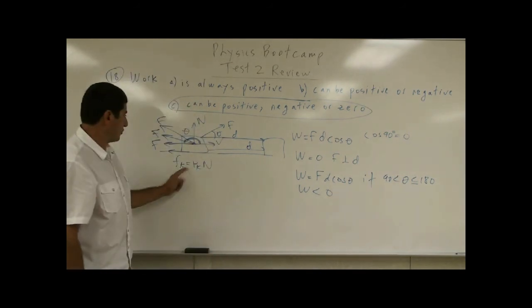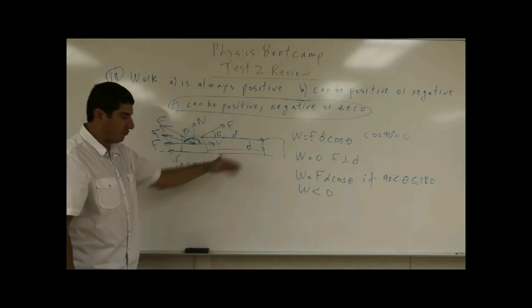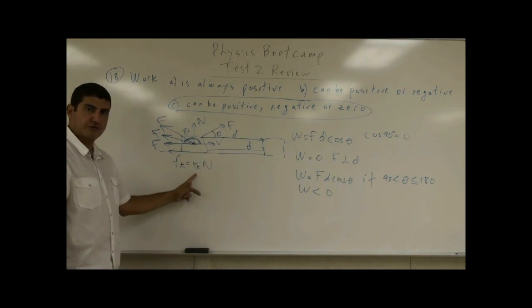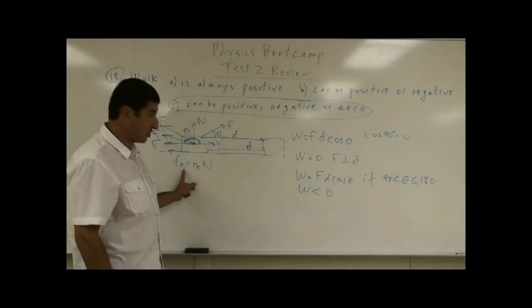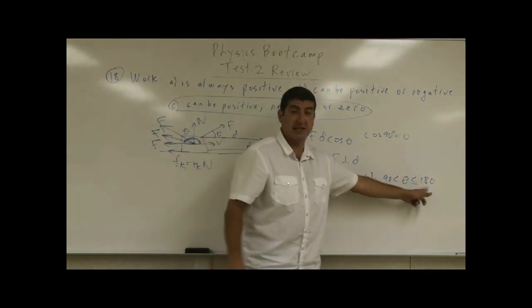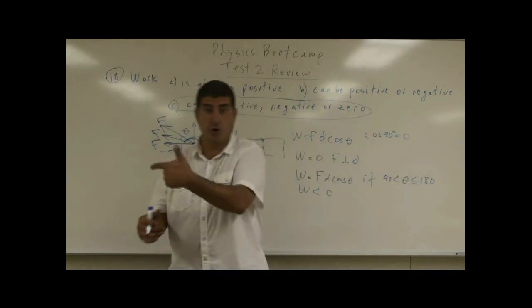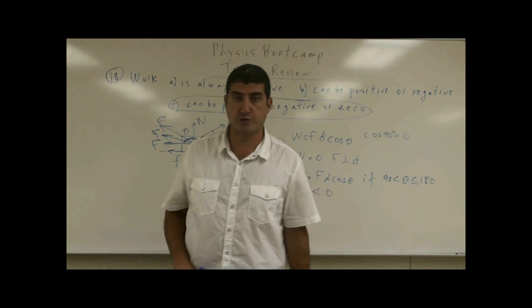So the friction force is always opposed to the direction of motion. It's equal to the coefficient of kinetic friction times the normal force and therefore the work done by friction is equal to negative. And the angle of the friction is going to be actually 180. It's going to be exactly opposed to the direction of the motion.